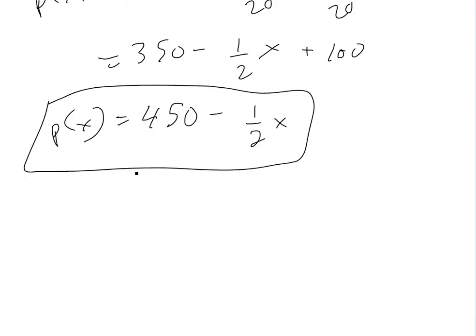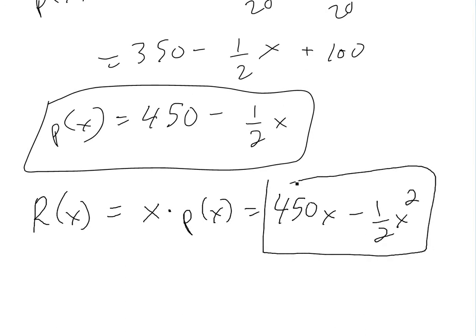Now for revenue, you can see my video link below for more detail, but it's basically the X amount of items you bought times the price you're selling at. So R(x) = X × P(x) = 450X minus (1/2)X². This is our revenue function.